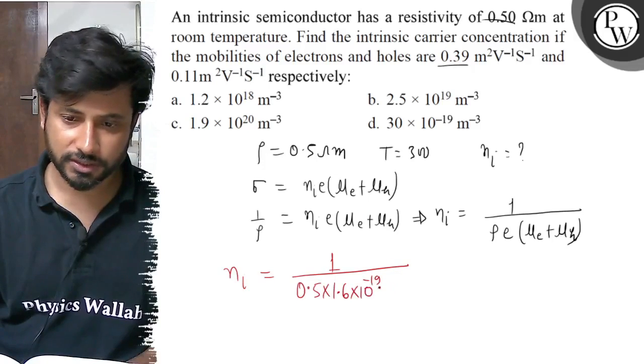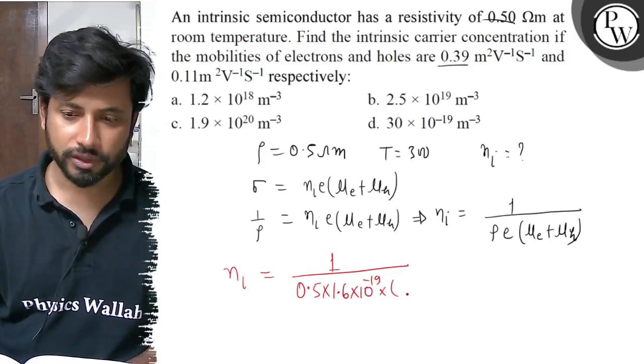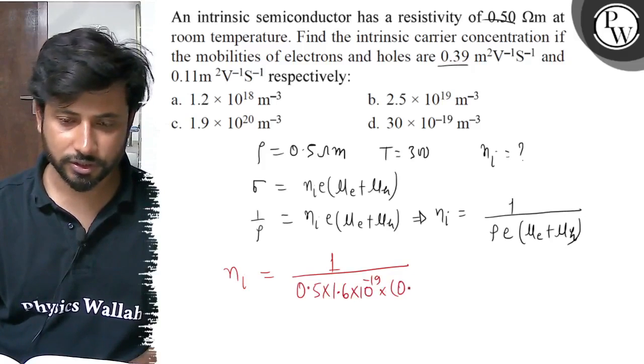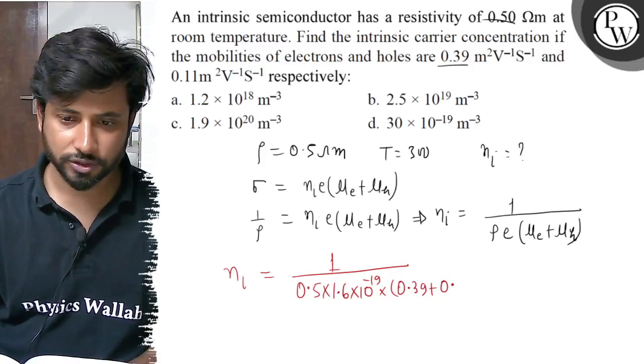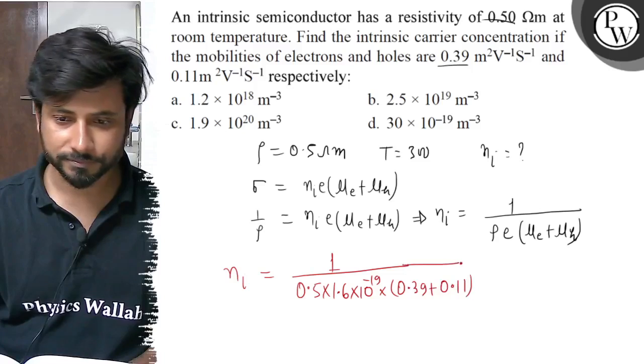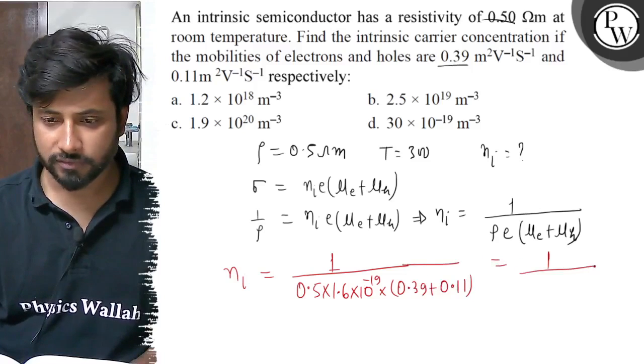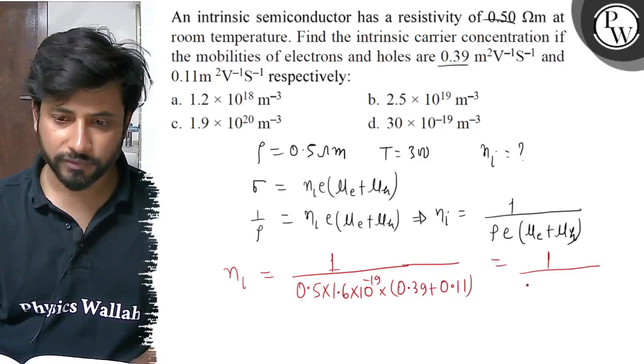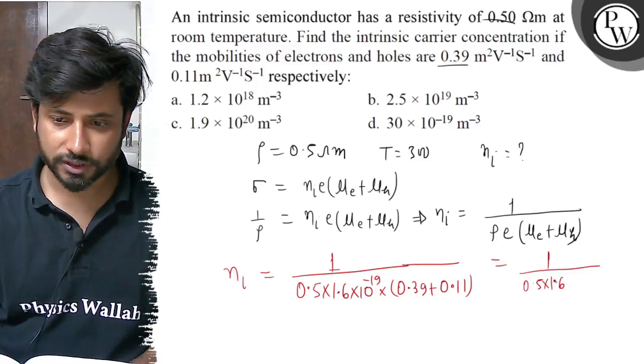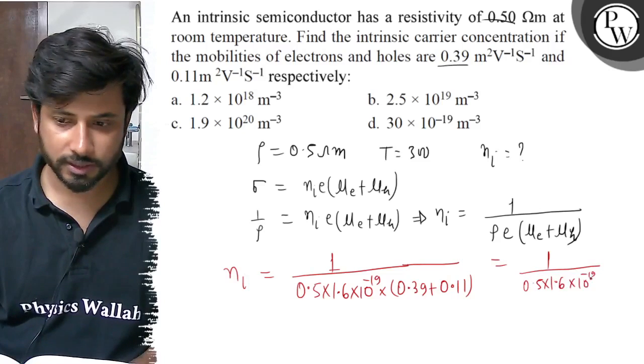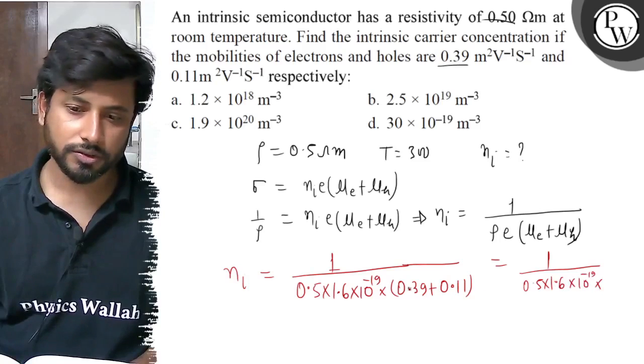So here we have 0.39 plus 0.11. So here we have got 1 divided by 0.5 times 1.6×10⁻¹⁹ times 0.49, which equals 2.5×10¹⁹.